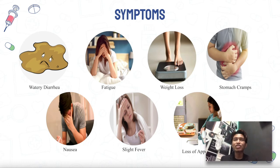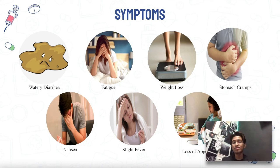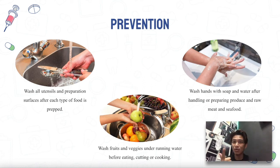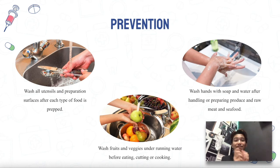Symptoms usually appear on average 7 days after ingestion of sporulated oocysts, with a range of 2 days to 2 weeks. This disease can be diagnosed by examining stool specimens. To prevent cyclosporiasis: always wash your hands with soap and water after handling and preparing produce, raw meats, and seafood; wash all utensils and preparation surfaces after each type of food is prepared; and wash fruits and vegetables under running water before eating, cutting, or cooking.